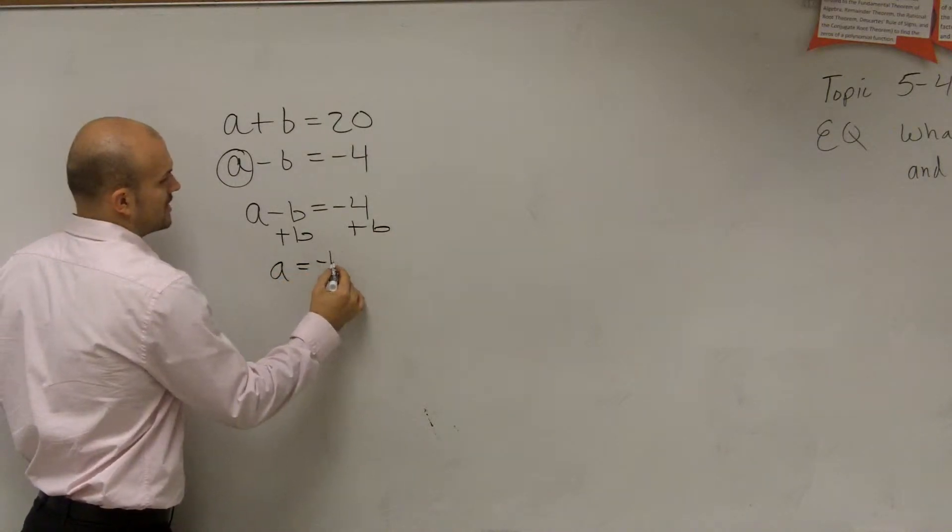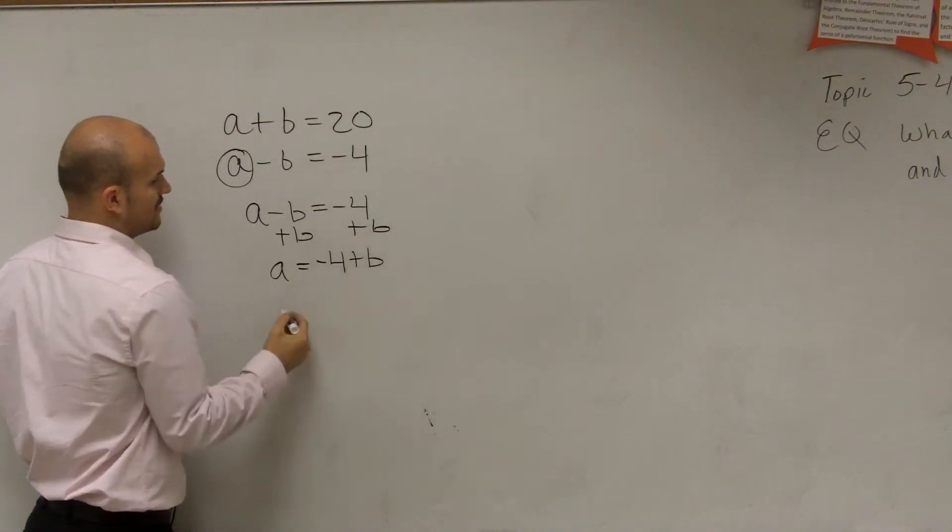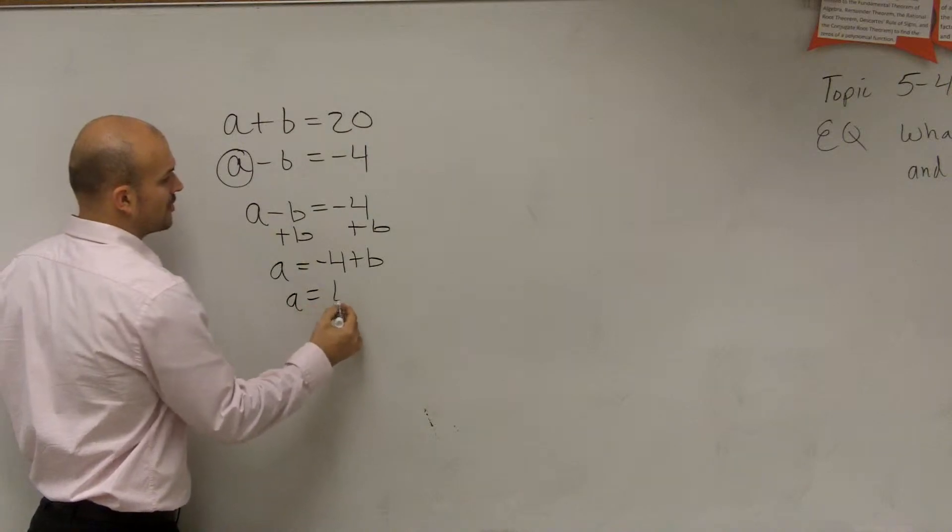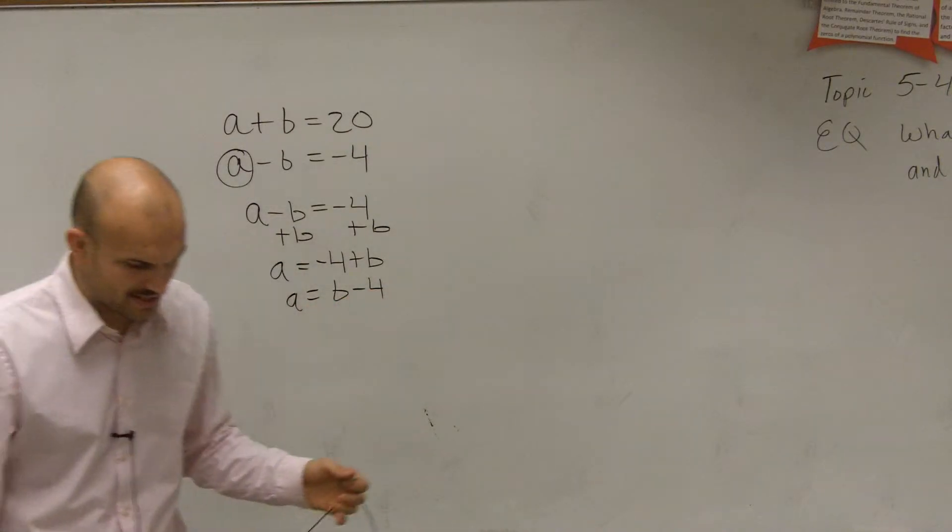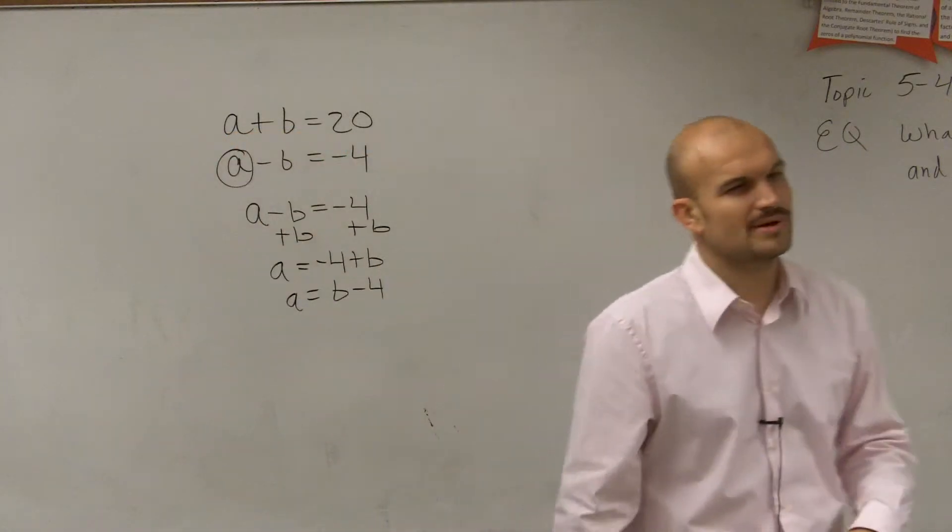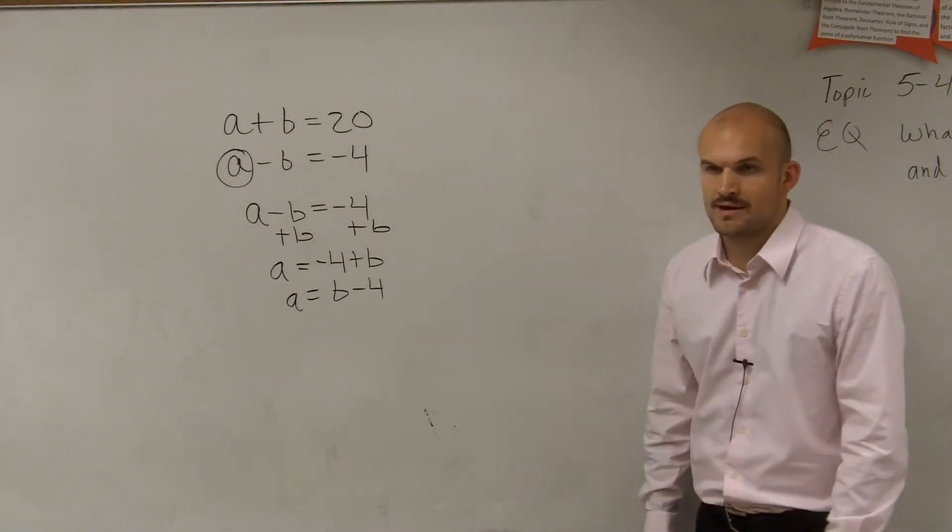Therefore we have a equals negative 4 plus b, but we always usually, just in good form, always like to write the variable first. So we write a equals b minus 4. You don't have to rewrite it, but it's just kind of in good habit.